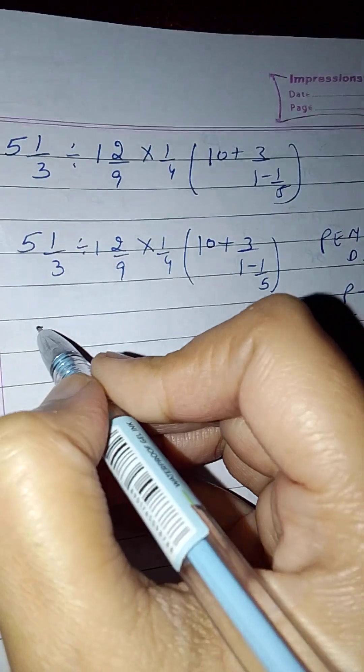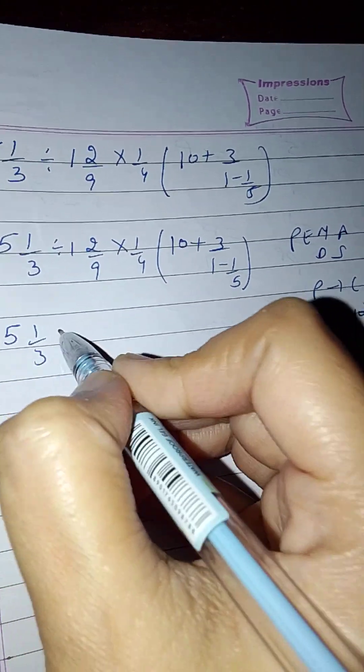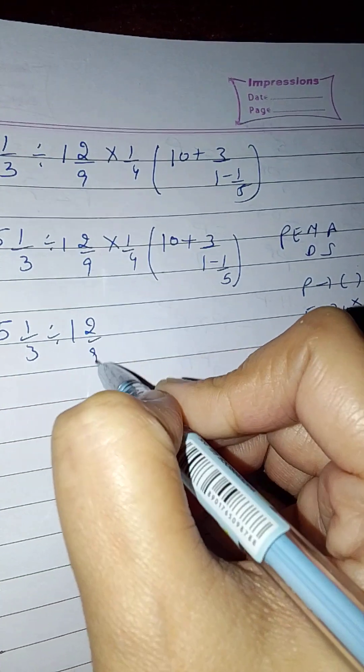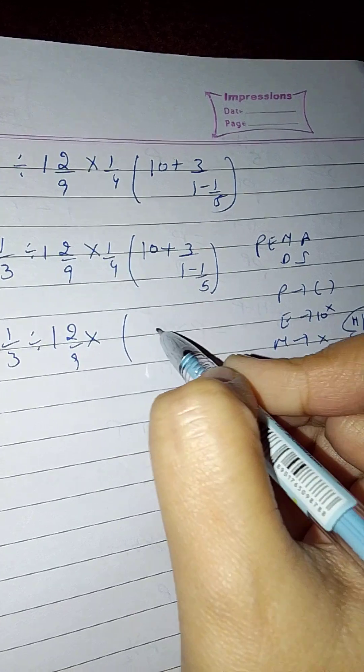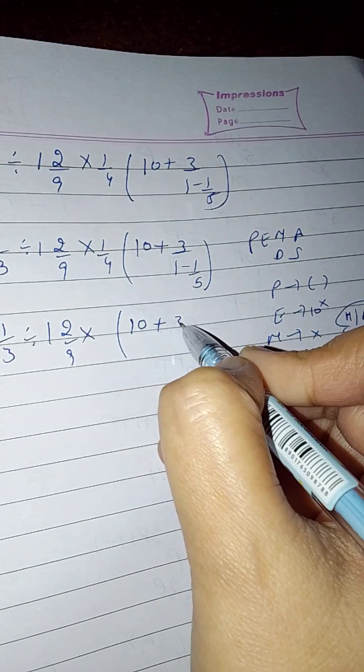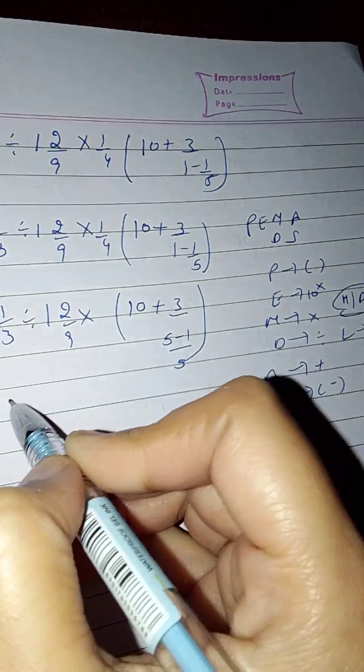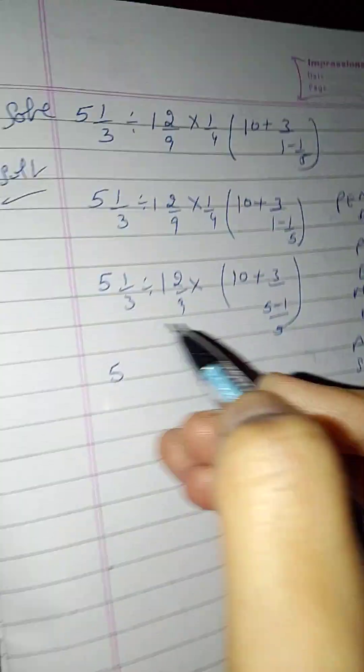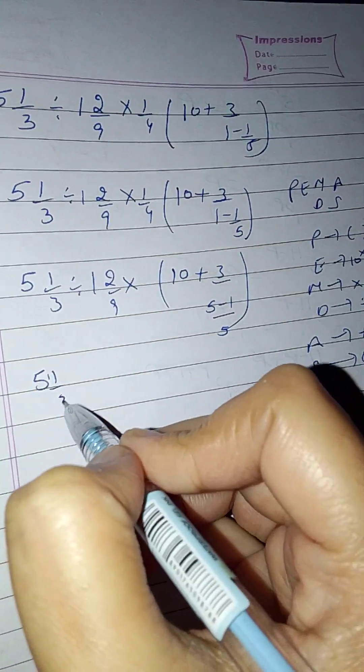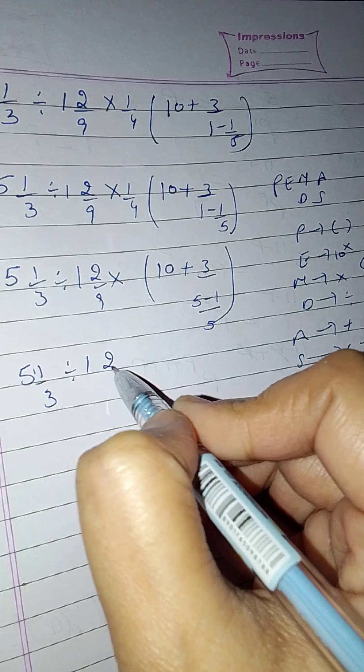First we solve parentheses, means bracket 10 plus 3 over 5, LCM is 5. 5 1/3 divide 1 2/9 into 1/4, 10 plus 3 over 5.